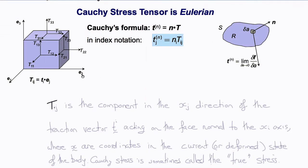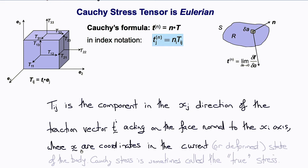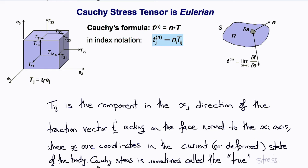We need to recognize that the Cauchy stress tensor is Eulerian. From Cauchy's formula, T_ij is the component in the x_j direction of the traction vector t_i acting on the face normal to the x_i axis, where little x are coordinates in the current or deformed state of the body. Since the stress actually exists physically in the deformed or current state, the Cauchy stress is sometimes referred to as the true stress.